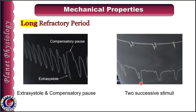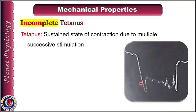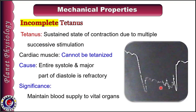The next property is tetanus. It is defined as a sustained state of muscle contraction due to multiple successive stimuli. Cardiac muscles cannot be tetanized because of the long refractory period, where the entire systole and the initial part of the diastole fall in the refractory period. Hence in cardiac muscle this is known as incomplete tetanus. This is essential to maintain blood supply to vital organs.